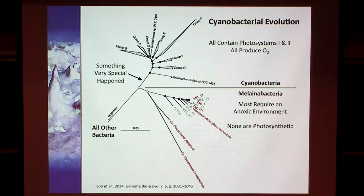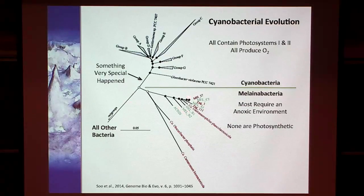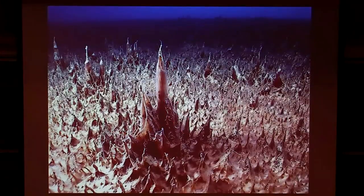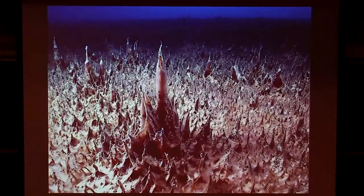All the cyanobacteria produce oxygen and have photosystem one and two. All the melanobacteria people have looked at require an anoxic environment — oxygen actually poisons them. There are a few that can handle a little oxygen, and none of them found are photosynthetic. So the closest relatives to the most important photosynthetic organisms for us to exist don't like their relatives. There was some huge division in the family tree that allowed the cyanobacteria to control the world. Most melanobacteria are found in things like the guts of animals — some are inside your gut, and they used to be mistaken for remnants of food because they look like cyanobacteria.